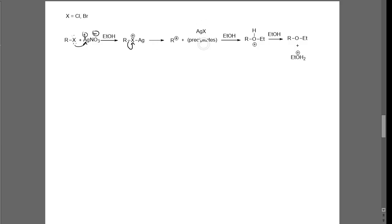Now our strongest nucleophile in solution is also our solvent, which you'll often see for SN1 reactions. In this case, our ethanol is forming a dual purpose — it is our nucleophile and it is our solvent. We have a lot of it, which is why ethanol is going to be the primary reagent to attack our carbocation intermediate. We're going to do a nucleophilic attack on that carbocation intermediate.